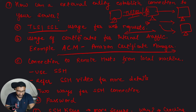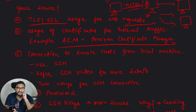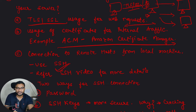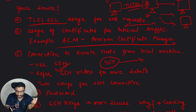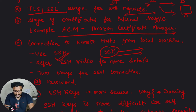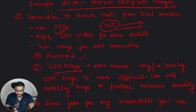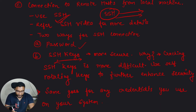Moving to the third point: when you make a connection from your local machine to a remote host, you would generally use SSH. When using SSH, you must ensure the connection is properly authenticated in a secure way. There are two approaches: maintaining credentials such as a password, or using SSH keys. SSH keys are the more preferred way.